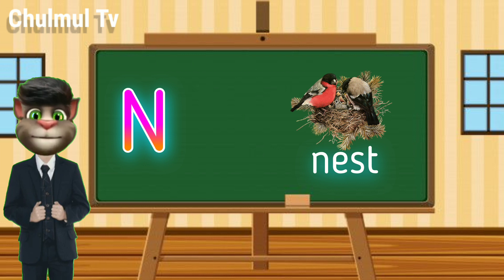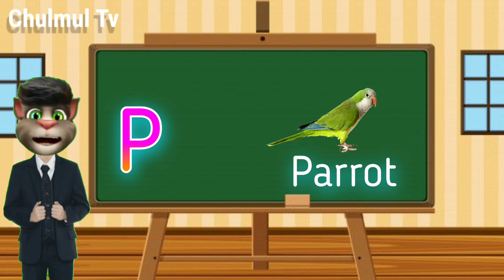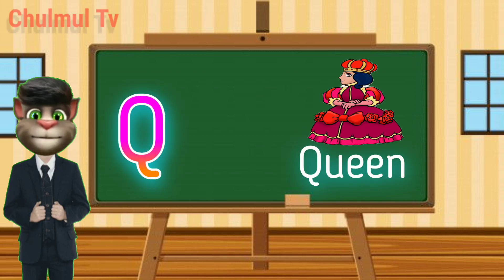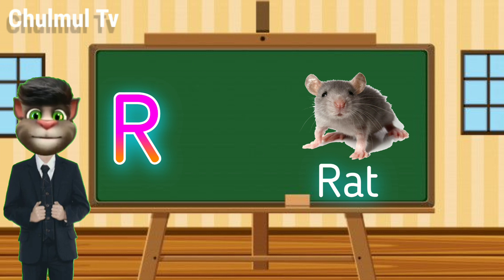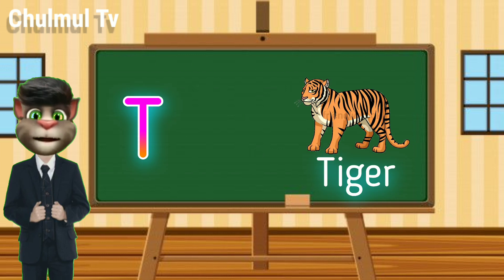N for nest, O for orange, P for parrot, Q for queen, R for red, S for sun, T for tiger.